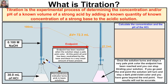Titration is the experimental process of determining the concentration and/or pH of a known volume of strong acid by adding a known quantity of known concentration of a strong base to the acidic solution. Here we have a titration setup you will see in a high school or first-year college chemistry lab. In this flask we have 30 milliliters of hydrochloric acid — a strong acid — and what we don't know is the concentration or the pH of this acid.